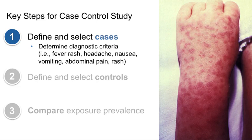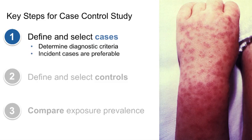Even though study cases should be representative of all cases, it is not necessary to enroll every case of the disease in your study. You may end up with a sample of cases that meet your diagnostic criteria from a specific population, such as a hospital, clinic, or other resource. The type of case you select is also important — it is better to use incident cases rather than prevalent cases, as prevalent cases are influenced by the duration of the disease.